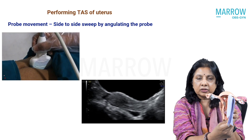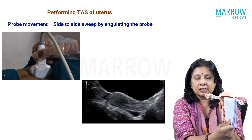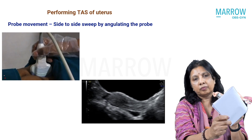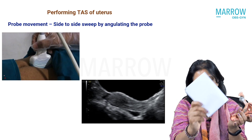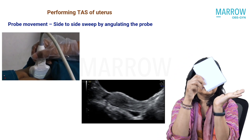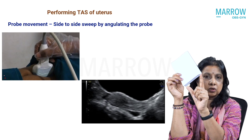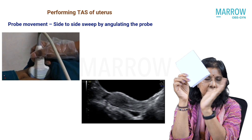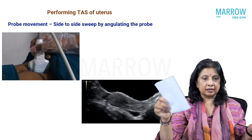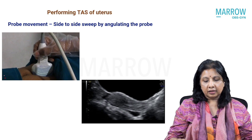But because the uterus is so small, I really don't slide it. I do a side-to-side movement by angulating the probe. Now why do I call this movement angulation? Because if this is the abdomen and this is my probe, I am moving on what is called the broad axis of the probe. So because I'm moving on the broad axis, I'm calling it angulating. This is the movement that you see in the top left clip.